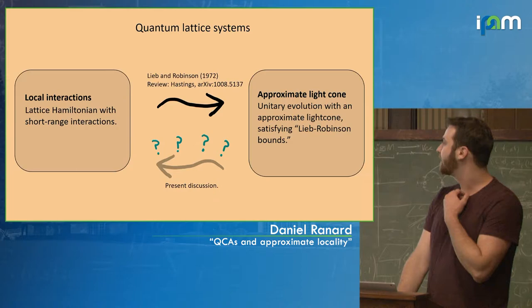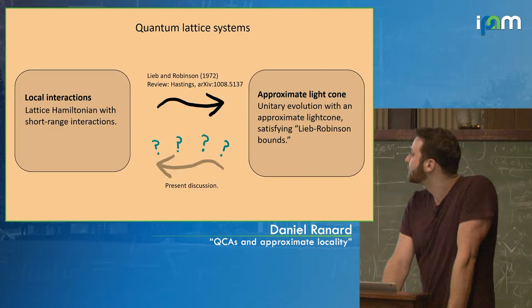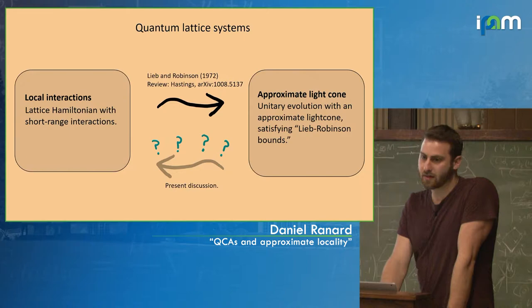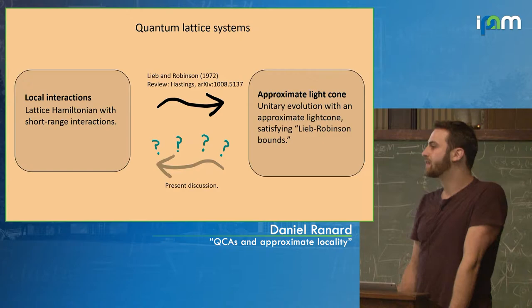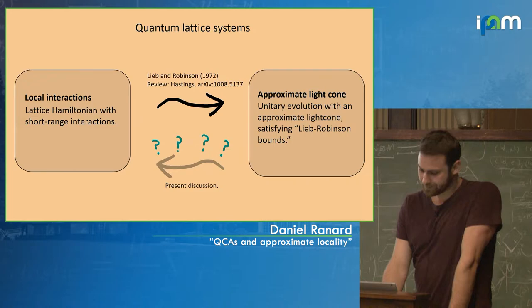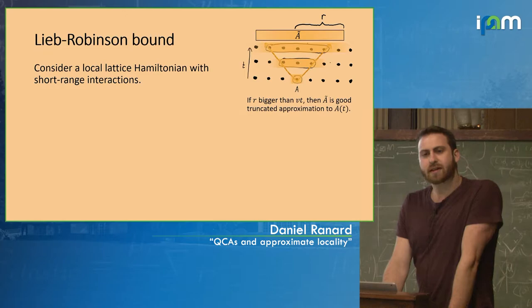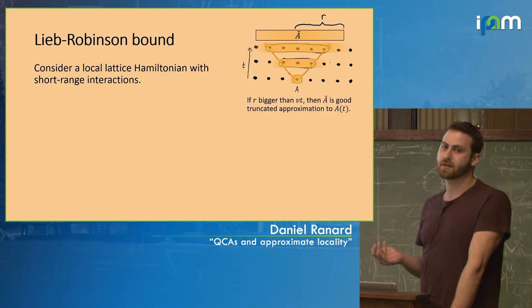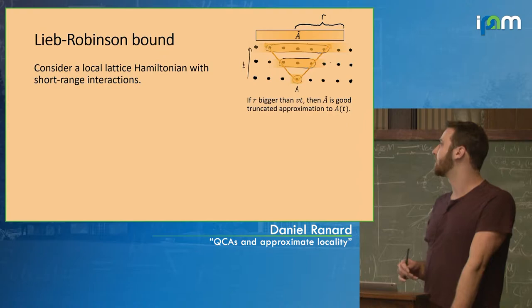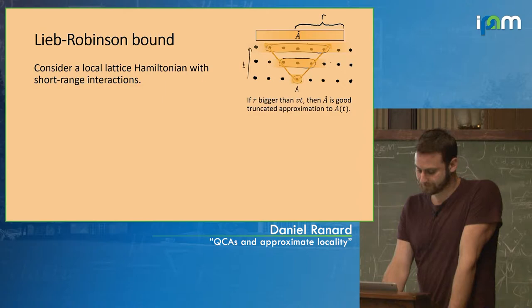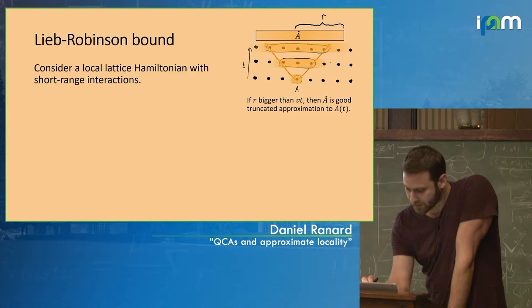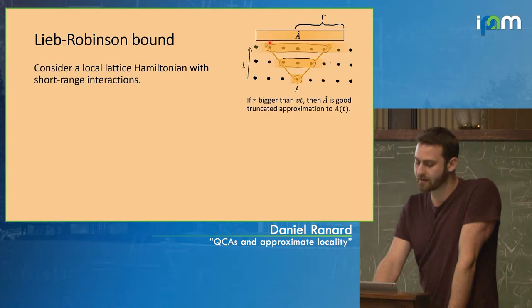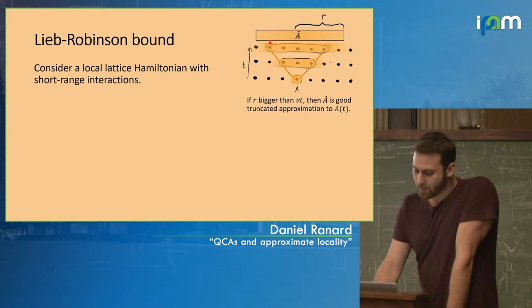This bleeding out of the cone is quantified by Lieb-Robinson bounds, which quantify this approximate light cone. Schematically, when you have local interactions you get an approximate light cone. You can also ask the converse: if I have dynamics that are unitary and they have some approximate light cone, are these dynamics generated by a local Hamiltonian? I'll answer that in 1D. Here I'll give you a statement of the Lieb-Robinson bounds for a 1D local lattice Hamiltonian.